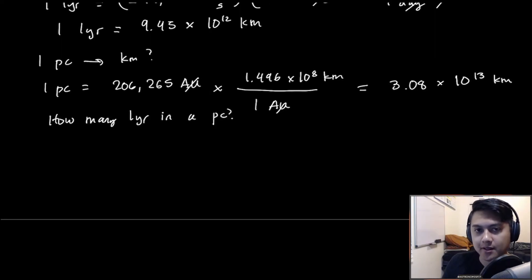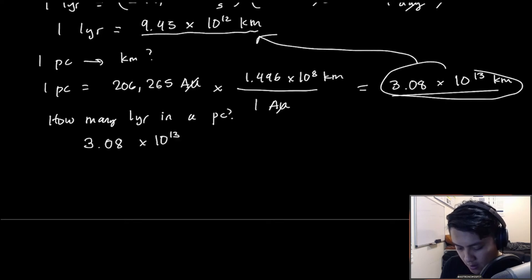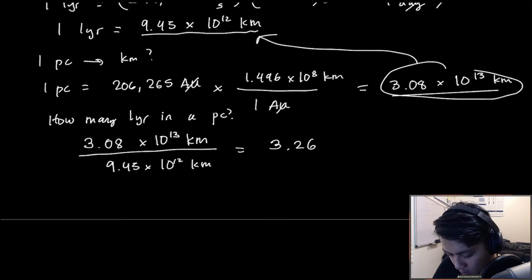Finally, to calculate how many light years there are in a parsec, I'm going to take the distance of a parsec in kilometers and divide it by the distance of a light year in kilometers. So we have 3.08 times 10 to the 13 kilometers divided by 9.45 times 10 to the 12 kilometers. And we get 3.26. This tells us there are 3.26 light years in one parsec.